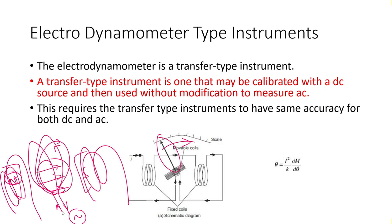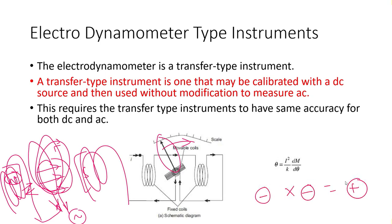The fixed coils use the same AC energy as the moving coil. When the current direction reverses, both the fixed field and the moving coil field reverse simultaneously — a negative times a negative gives positive — so the torque direction remains the same in both half-cycles.